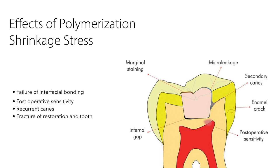Recurrent caries can develop because, although the gap may not be visible, it serves as a playground for bacteria. Bacteria are so small they can reproduce in those gaps, leading to secondary caries. Fracture of the restoration and tooth can also occur if resistance form is not kept in mind during preparation, leading to deflection of cusps or, in a more weakened state, fracture.